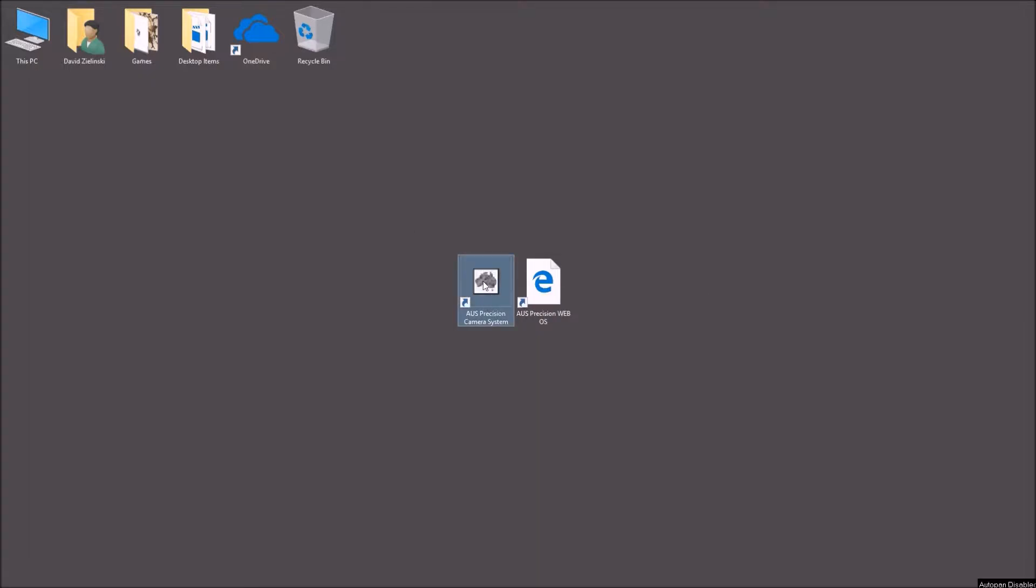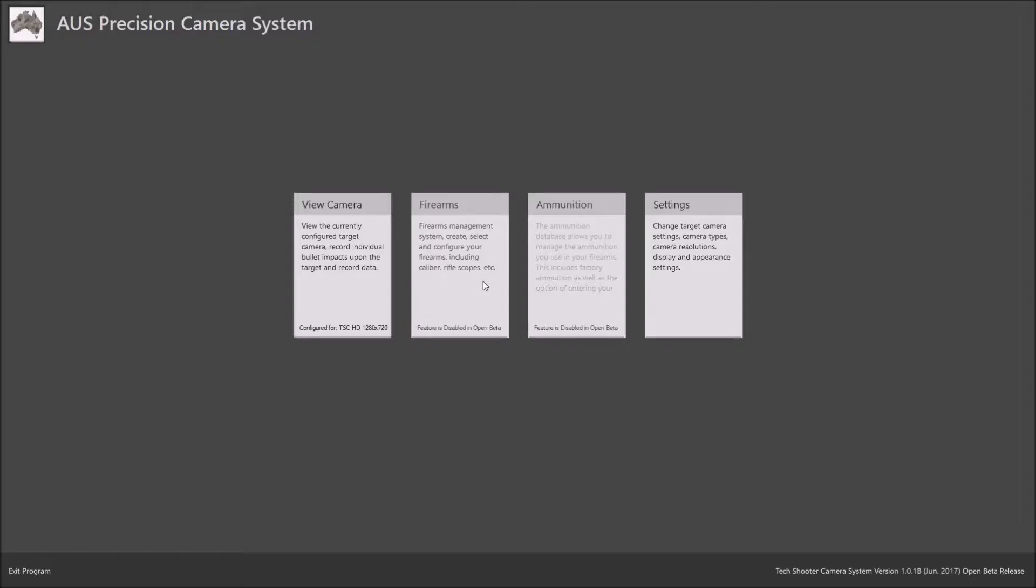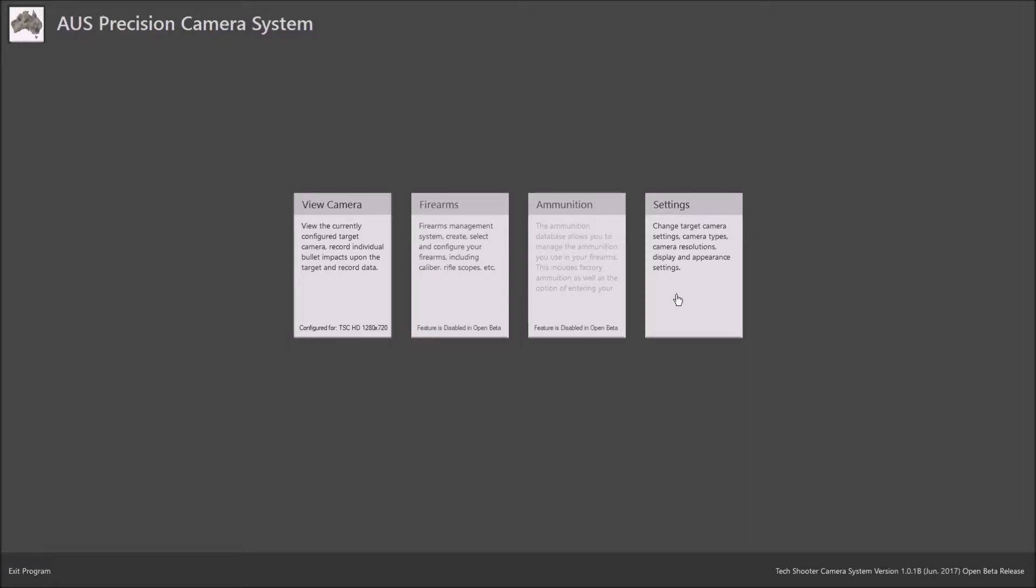So we'll just launch into the application now. It's a pretty basic interface here. You can go into the settings section which will allow you to change the camera's resolution from 1280 by 720 over to full HD 1920 by 1080.